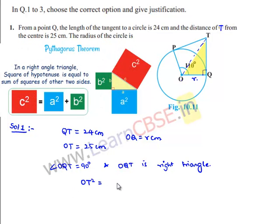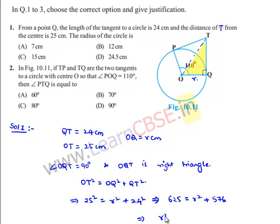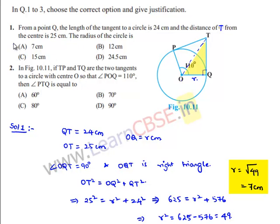OT² = OQ² + QT², which gives 25² = r² + 24². That is 625 = r² + 576, so r² = 625 − 576 = 49, therefore r = 7 cm. Option A is the correct choice.